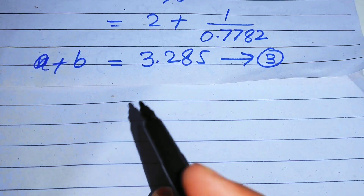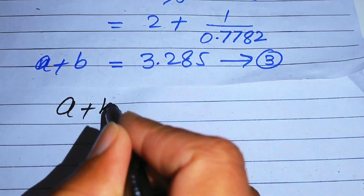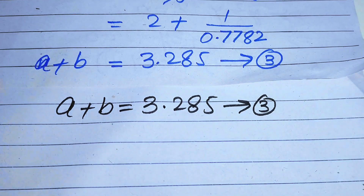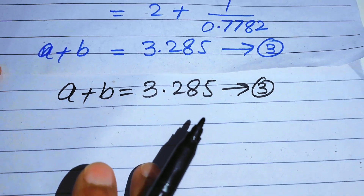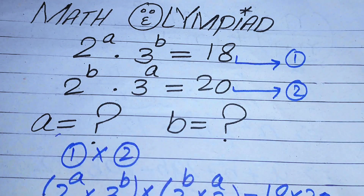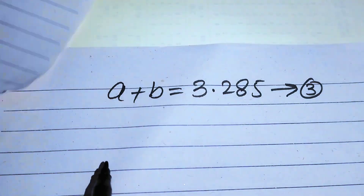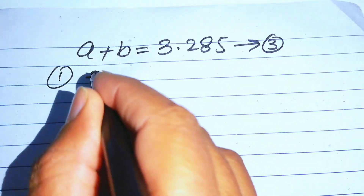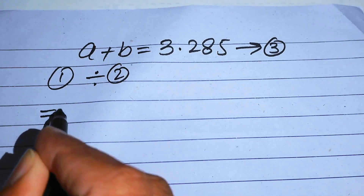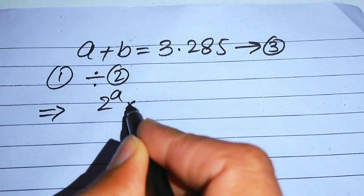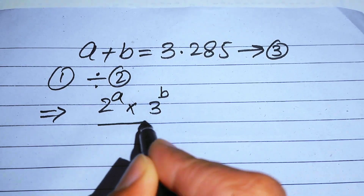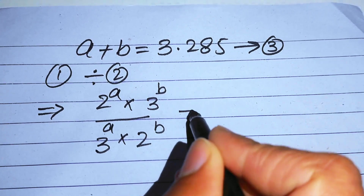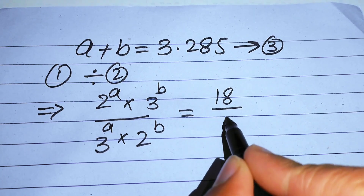We copy equation number 3: a plus b equals 3.285. Now, instead of multiplying, we divide equation number 1 by equation number 2. The left-hand side becomes 2 to the power of a multiplied by 3 to the power of b, divided by 2 to the power of b multiplied by 3 to the power of a, and this equals 18 divided by 20.